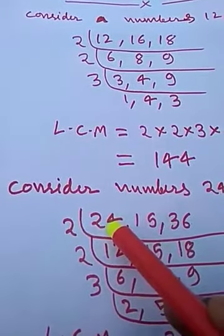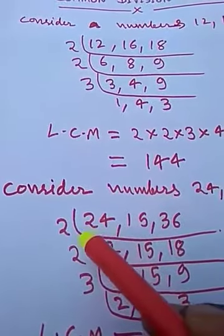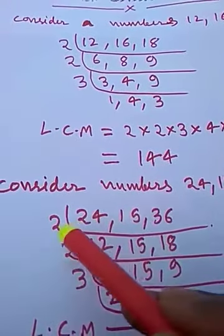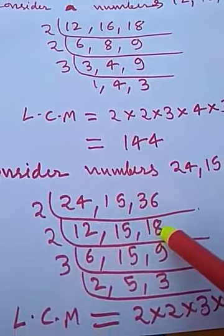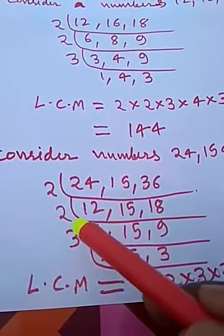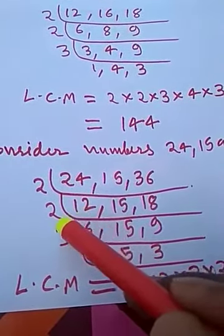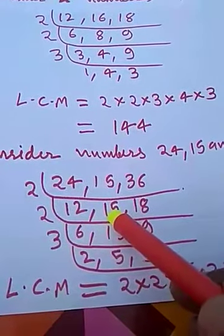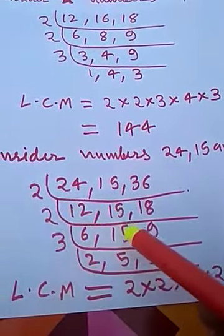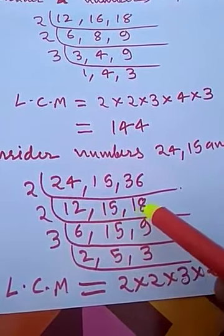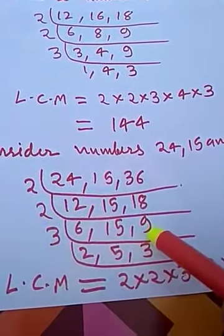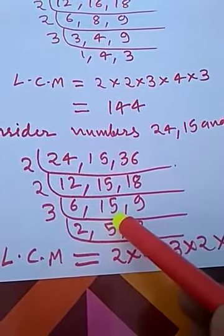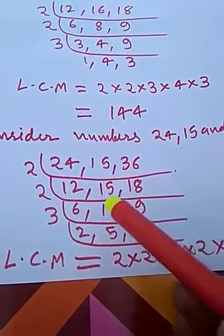2 divides 24 twelve times. 2 does not divide 15, so 15 comes down. 2 divides 36 eighteen times. Now divide again by 2: 2 divides 12 six times, 15 does not divide by 2 so 15 comes down, and 2 divides 18 nine times.